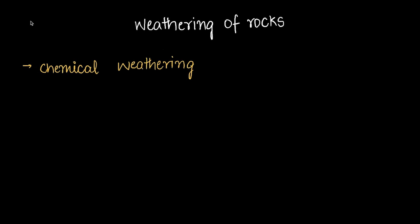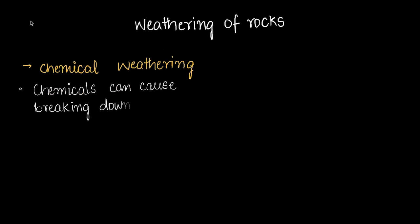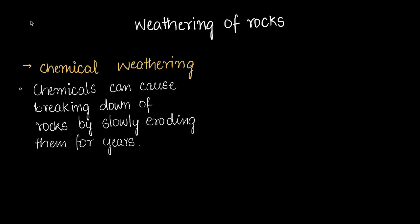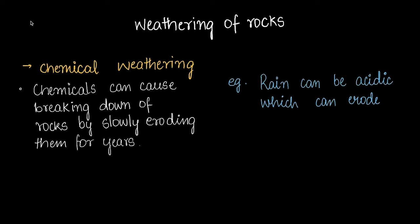In chemical weathering, chemicals cause the breakdown of rocks by slowly eroding them over years. For example, rain is often acidic and can slowly erode rocks, turning them into powdery soil.